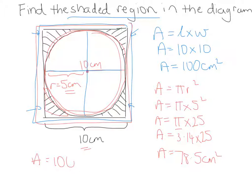The area will be 100, the whole rectangle, take away 78.5 which is the circle, which leads me to believe there are 21.5 centimeters squared in the shaded region.